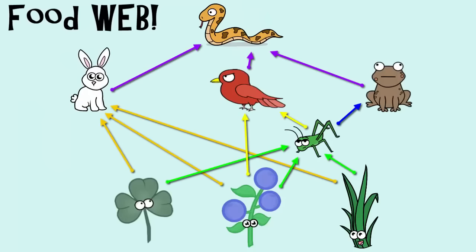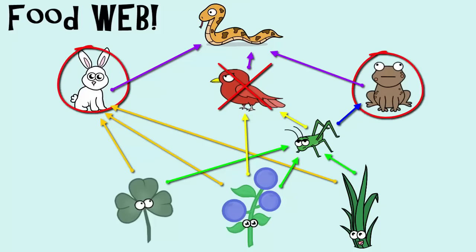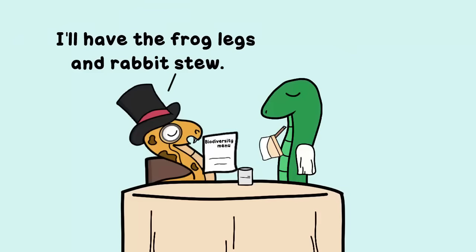Biodiversity can contribute to the sustainability of an ecosystem. What I mean by that is, let's say there was a decrease in the amount of small birds in this food web. Well, it's likely that will be harmful to other organisms. However, it is not the only thing that the snakes feed on — they have other options because of the biodiversity. The snakes also eat rabbits and they eat frogs.